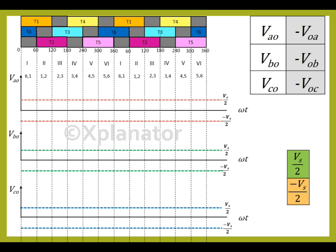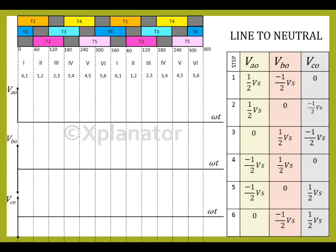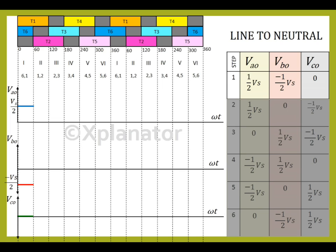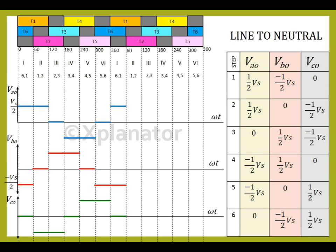In order to obtain the line to neutral voltage, we plot the values shown in the table. The 3 values in step 1 are plotted, followed by step 2, 3, 4, 5 and 6. The sequence repeats for another cycle. After all the values are plotted, join the lines to complete the line to neutral voltage plot.